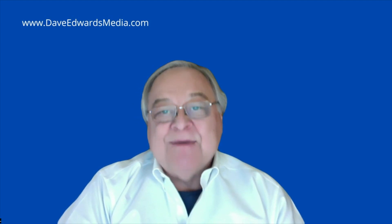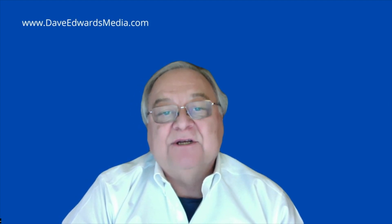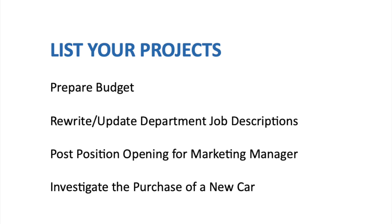Damon asked me to explain what I mentioned yesterday about developing a plan before using a digital system. Here are the things I suggest you write down and think about before you begin migrating your productivity system into a digital environment. First of all, list all of your projects — for example, preparing a budget, rewriting and updating departmental job descriptions, posting a position opening for marketing manager, investigating the purchase of a new car. These can be professional or personal projects. Make a list of them because you're going to be establishing a notebook or some other collection point for all the information related to each and every one of these projects.